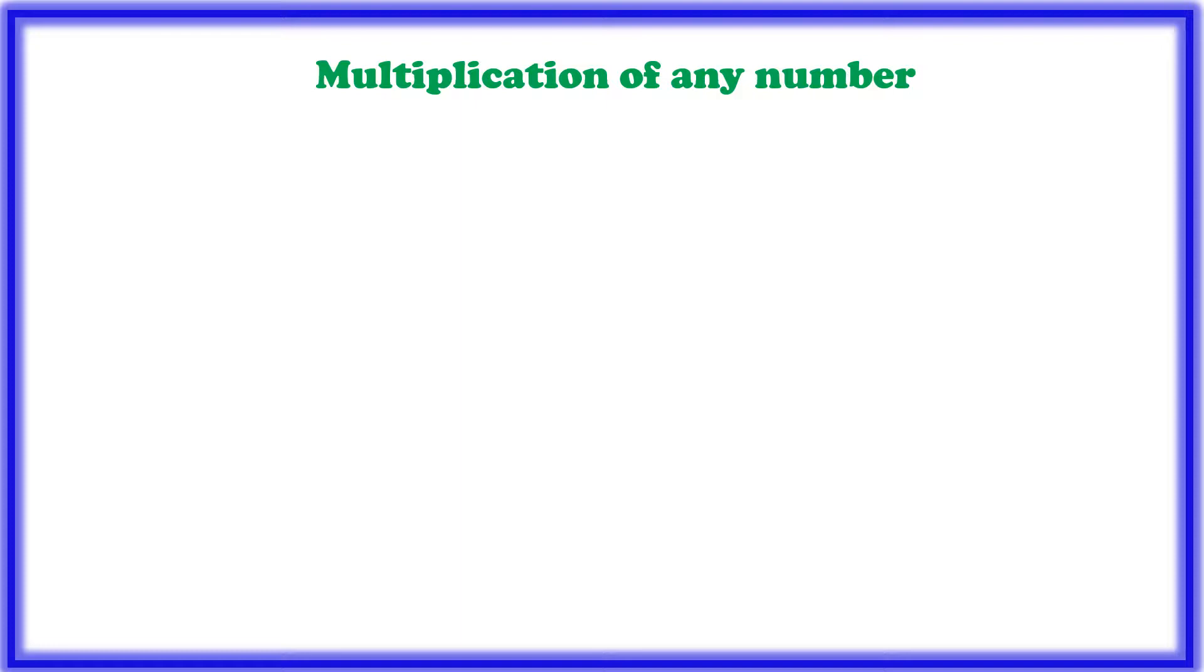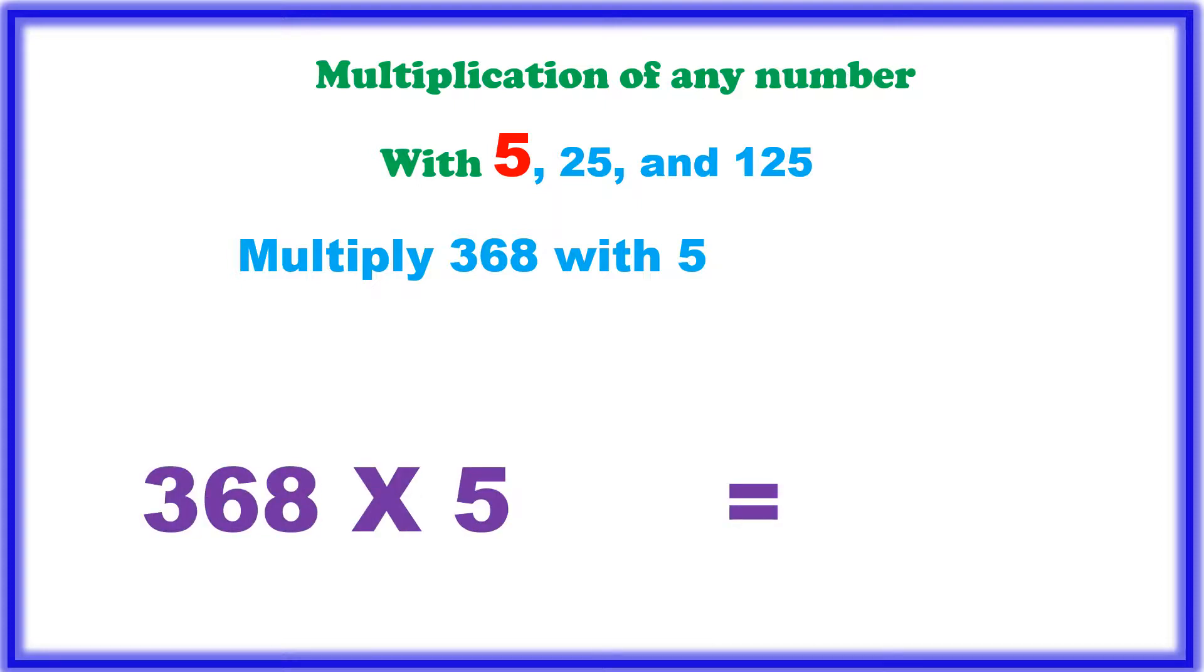Multiplication of any number with 5, we will learn it. Multiply 368 with 5. So first of all, if the same number 368 is multiplied by 10, then the same number plus 0 should be added, that is 3680. If the same number is multiplied by 100, you will get another 0, that is 36800.